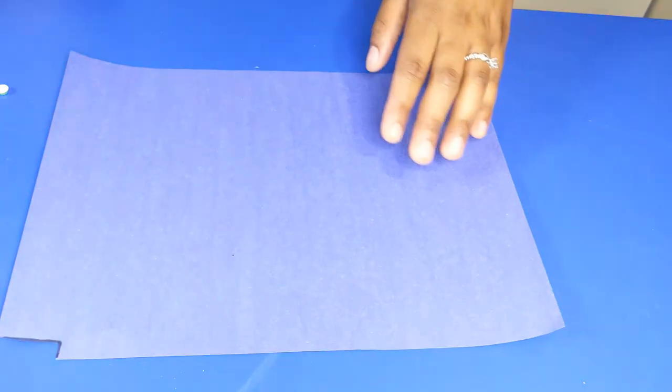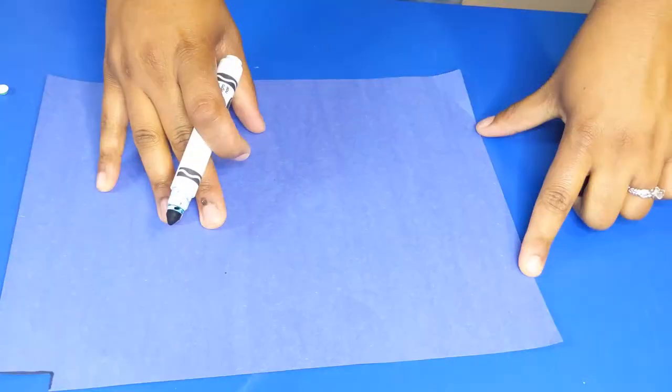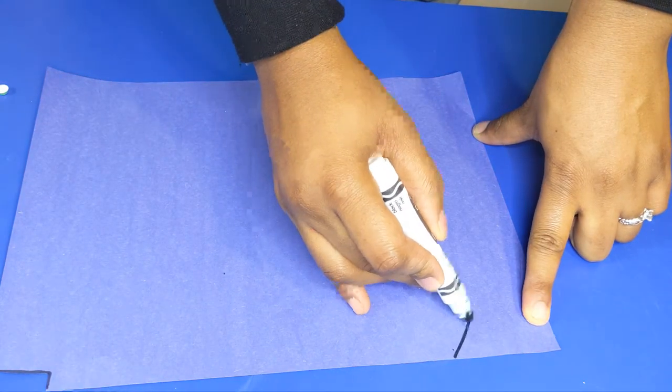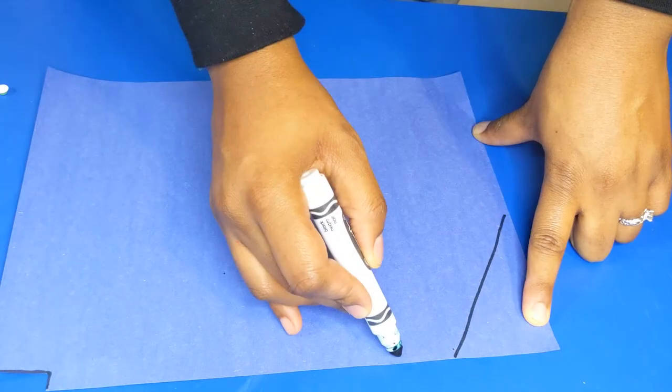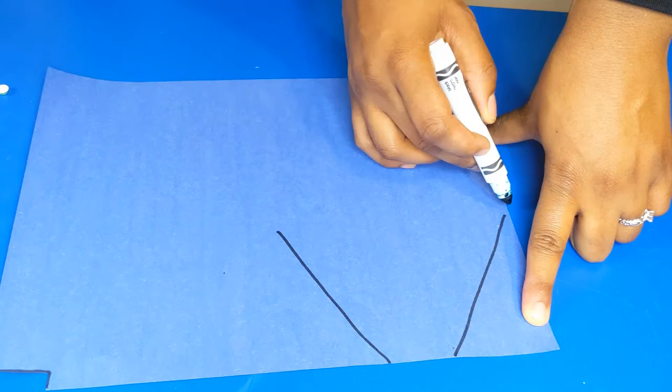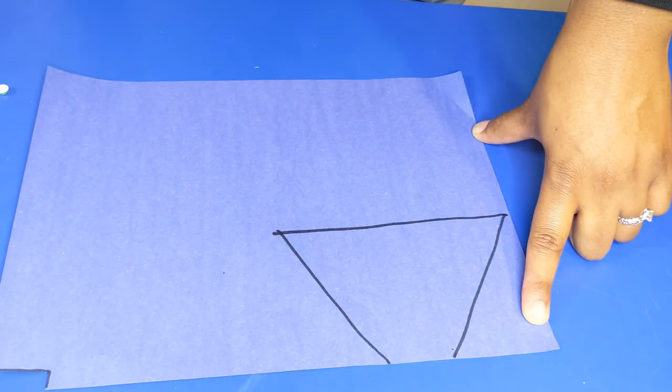Now we're going to go ahead and get the cape ready for our superhero. How do I want to draw this cape? You need a bit of a triangle. Go down, down, and across. Yeah, I like that.